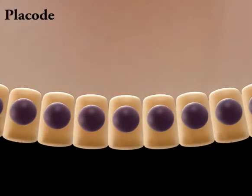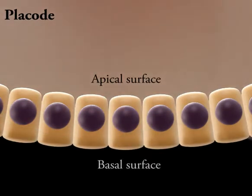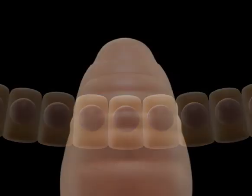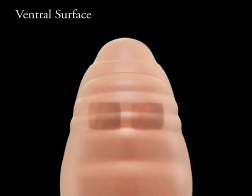A region of approximately 100 cells elongate along their apical basal axes to form the salivary gland placode. The placodes are initially square groups of cuboidal epithelial cells situated on each side of the ventral midline of parasegment 2.